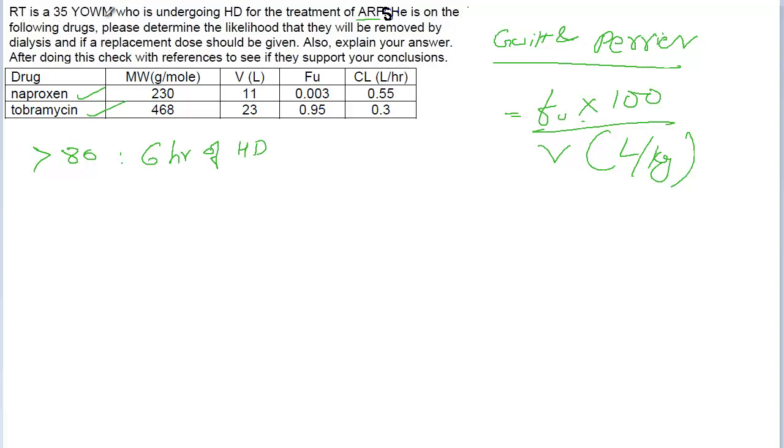RT is a 35-year-old woman who is undergoing hemodialysis for the treatment of acute renal failure. Obviously, in acute renal failure, sometimes you have several issues, and today this patient is on naproxen, tobramycin, and also she is on verapamil, atorvastatin, and ranitidine, but we are going to discuss just these two problems here.